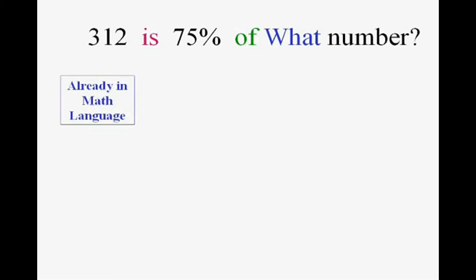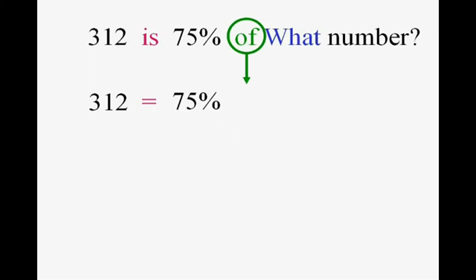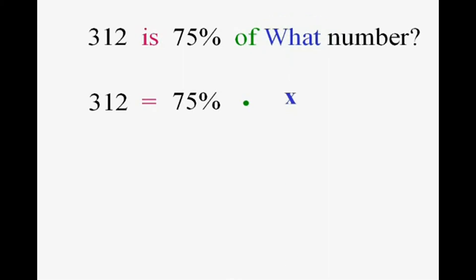'312' is already in math language. 'Is' becomes equals. 'Seventy-five percent' is already a number. Remember what 'of' is — times. And 'what number' becomes x. I'm going to treat 'what' as 'what number.'